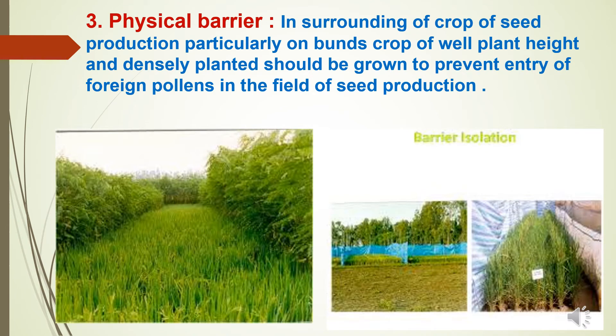The third type is physical barrier. In the surroundings of the seed production crop, particularly on bunds, a crop of tall plant height that is densely planted should be grown to prevent entry of foreign pollens into the field of seed production. Where there is a problem maintaining spatial or temporal isolation, we must follow the physical barrier method, by which pollen from foreign fields will not contaminate the seed field.